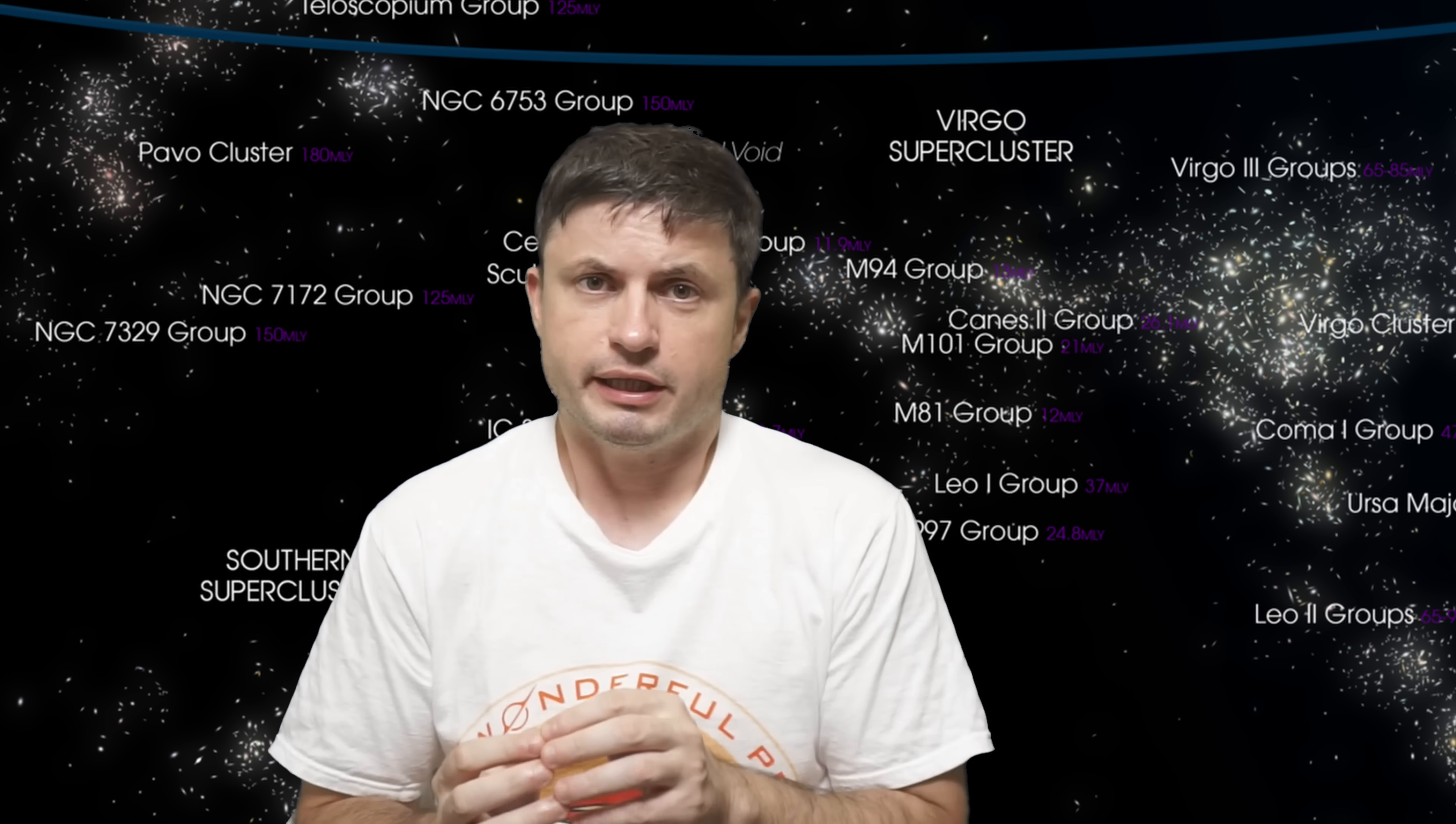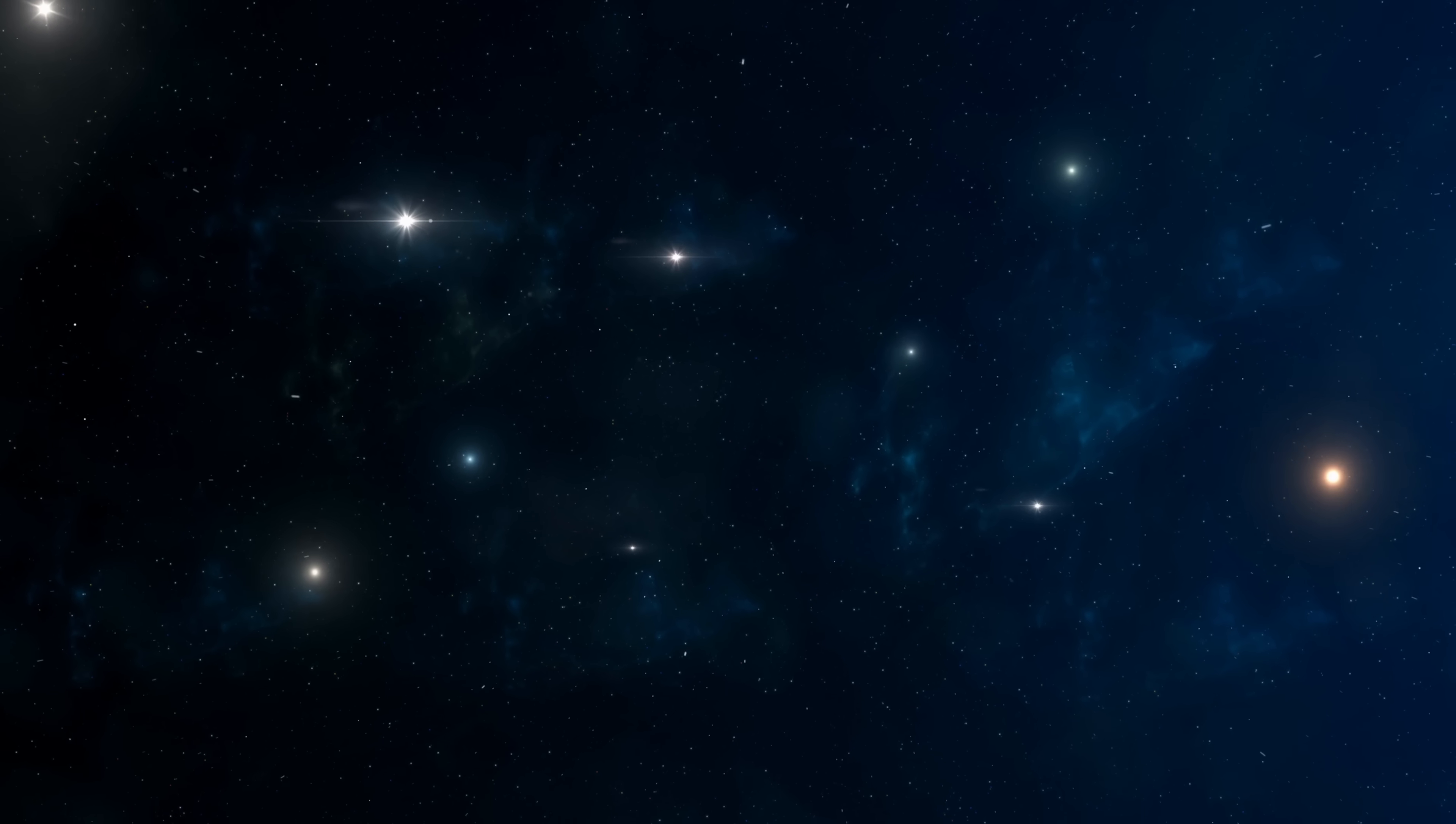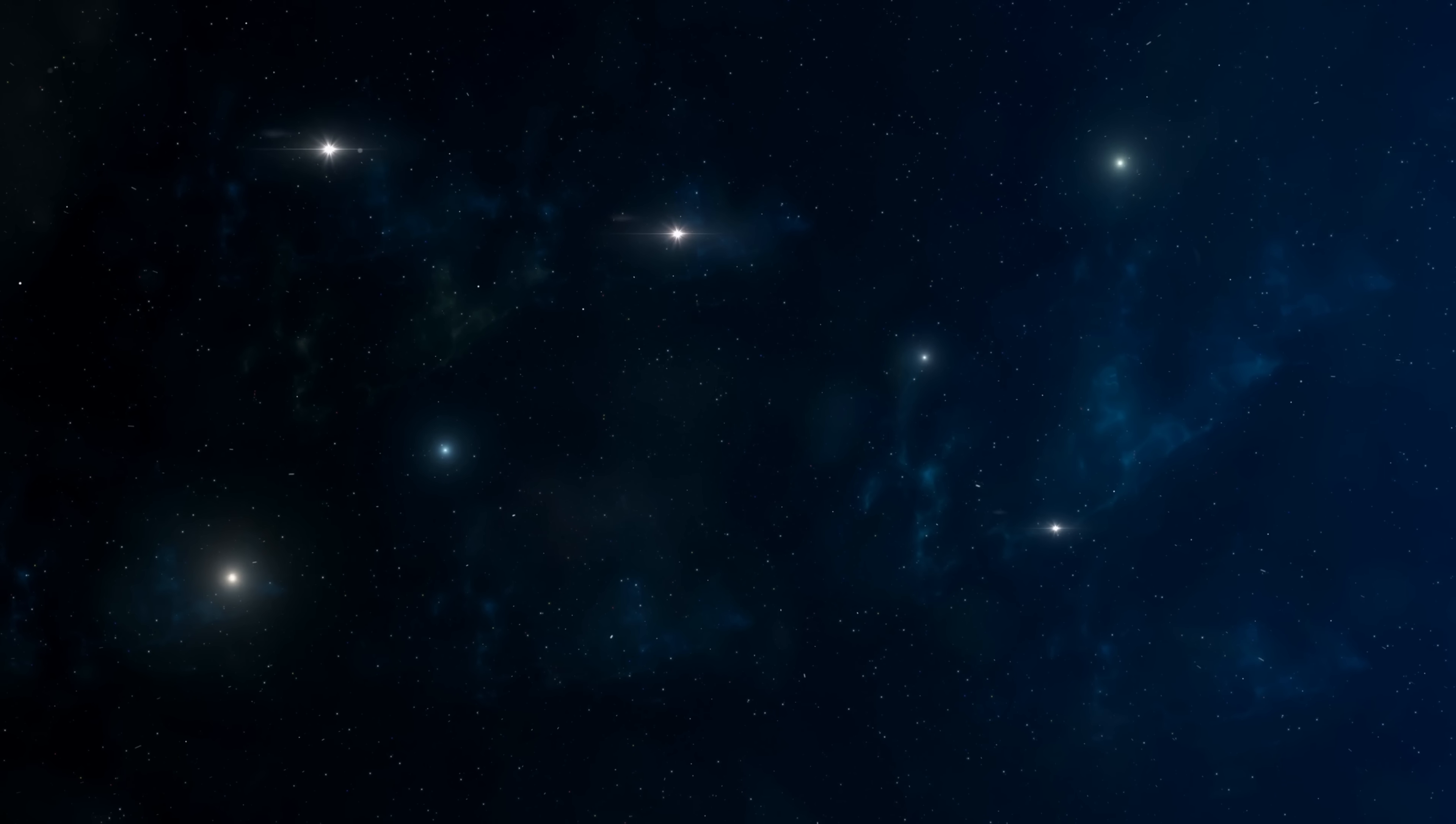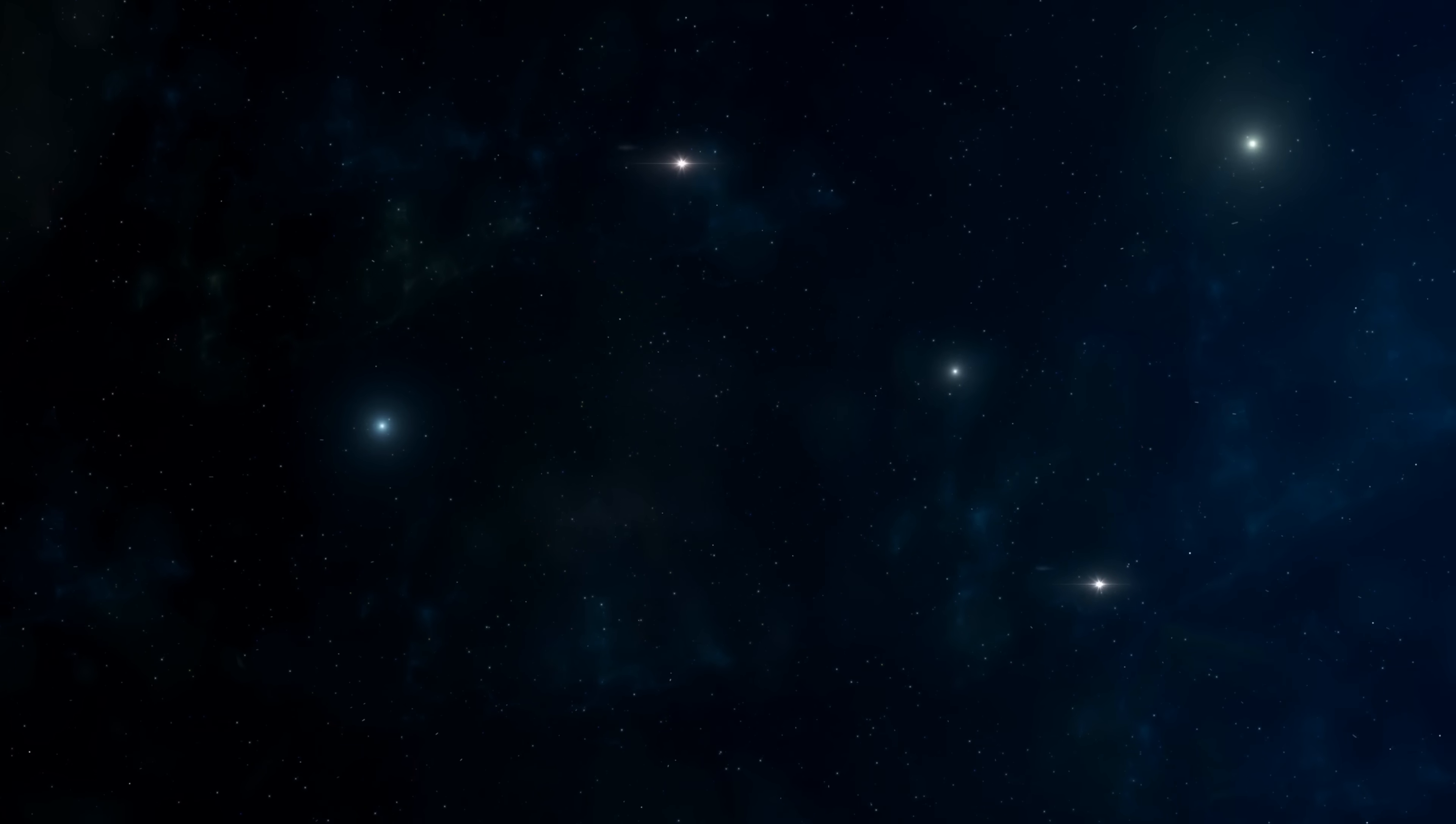But in essence Laniakea represented approximately 100,000 different galaxies, all gravitationally connected, and all moving in a certain direction. At least that was the discovery 10 years ago.